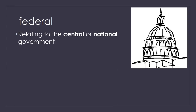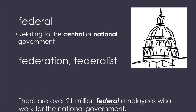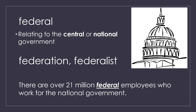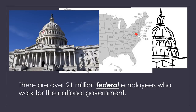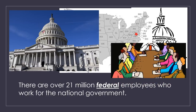Our next word is federal. That relates to the central or national government. You might see 'federation' or 'federalist.' There are over 21 million federal employees who work for the national government. Recently we had a federal shutdown for a couple days, meaning everyone who worked for the national government — a good majority of them — had to stay home because Congress could not agree on the budget and how to pay employees and allocate funds for programs like the military, education, airports, transportation, and food safety.